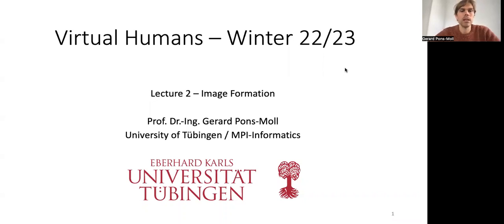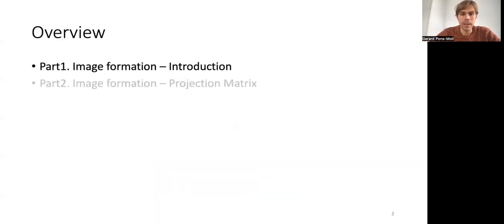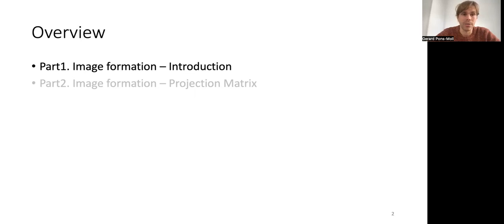Hello, welcome to Virtual Humans lecture two. Today we will see the image formation process. Although this is a Virtual Humans course, oftentimes we're interested in extracting 3D human models from images. In order to do that, we need to understand how images are formed and how real people appear in images, and what are the projection effects that occur. We will start with an introduction to get an intuitive idea of things like linear perspective, and then we will formalize this and see how we can express the whole geometric part of the image formation process with a projection matrix.